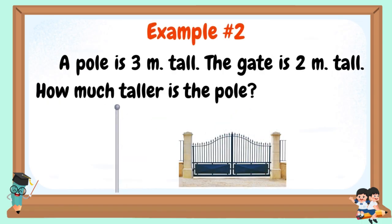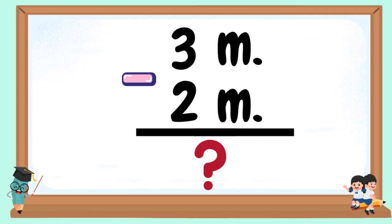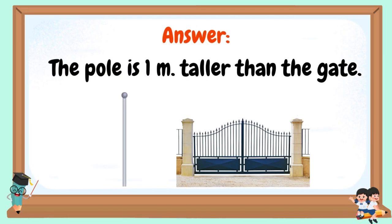Example number 2: A pole is 3 meters tall. The gate is 2 meters tall. How much taller is the pole? 3 meters minus 2 meters. 3 minus 2 equals 1. The pole is 1 meter taller than the gate.